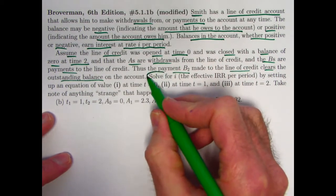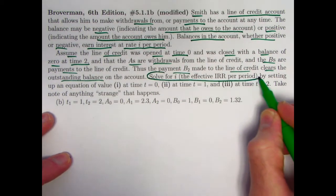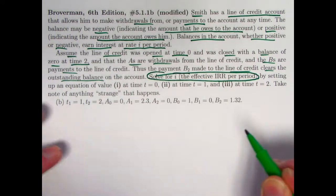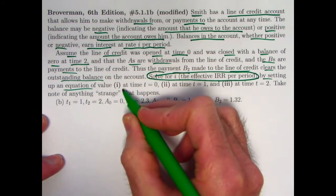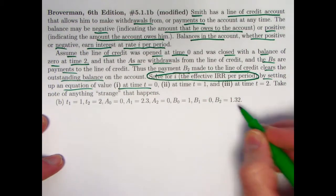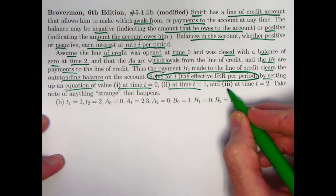Thus, these all have non-negative signs. Thus, payment B2 made to the line of credit clears the outstanding balance to make it zero on the account. After this payment of 1.32 is made at time two, then the account is back to zero. The goal is to solve for I, this effective internal rate of return per period. And here's some extra directions by setting up an equation of value in three ways.